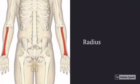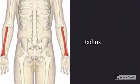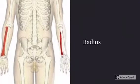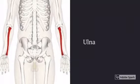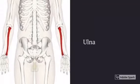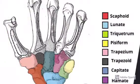This bone is your radius. Notice that it's on the thumb side of your arm. This bone is the ulna. Notice that it is on the pinky side of your arm.